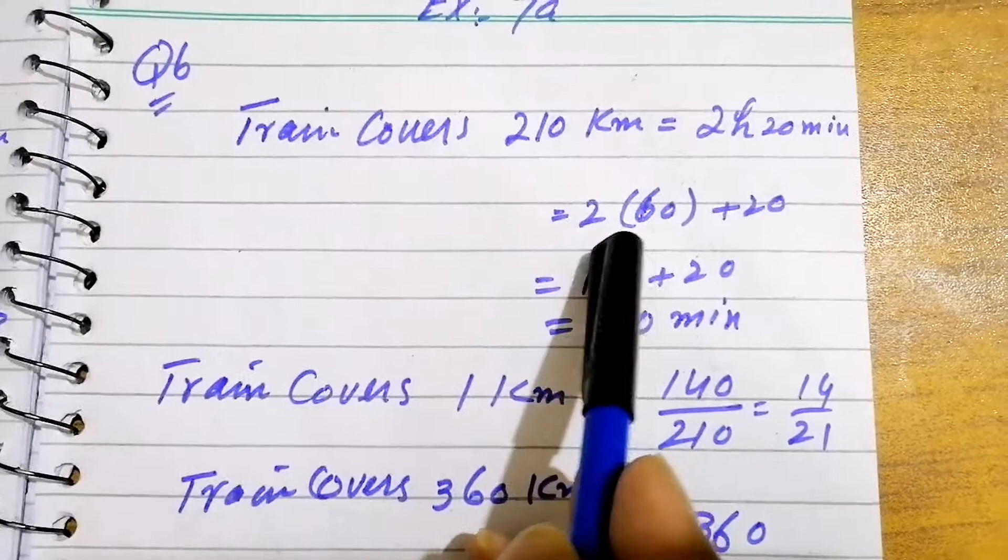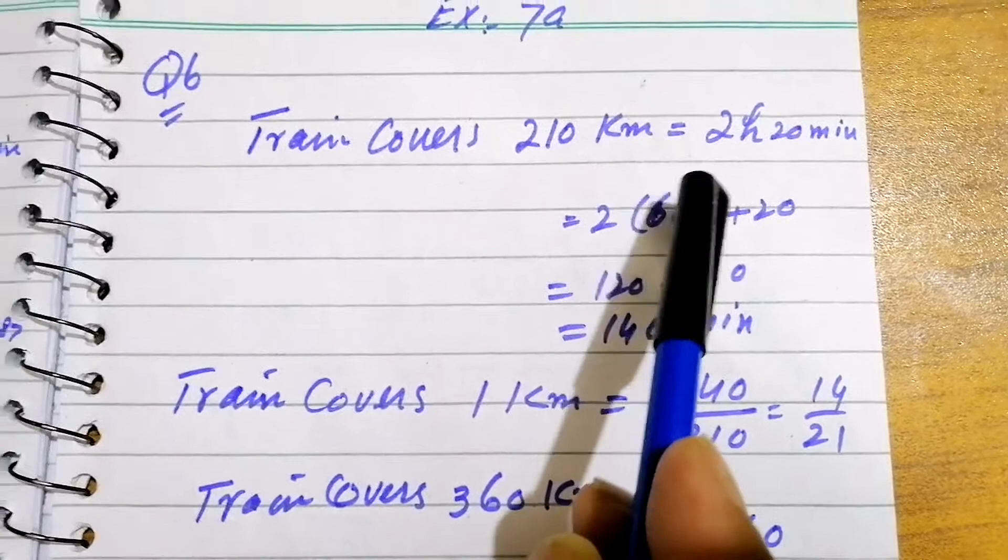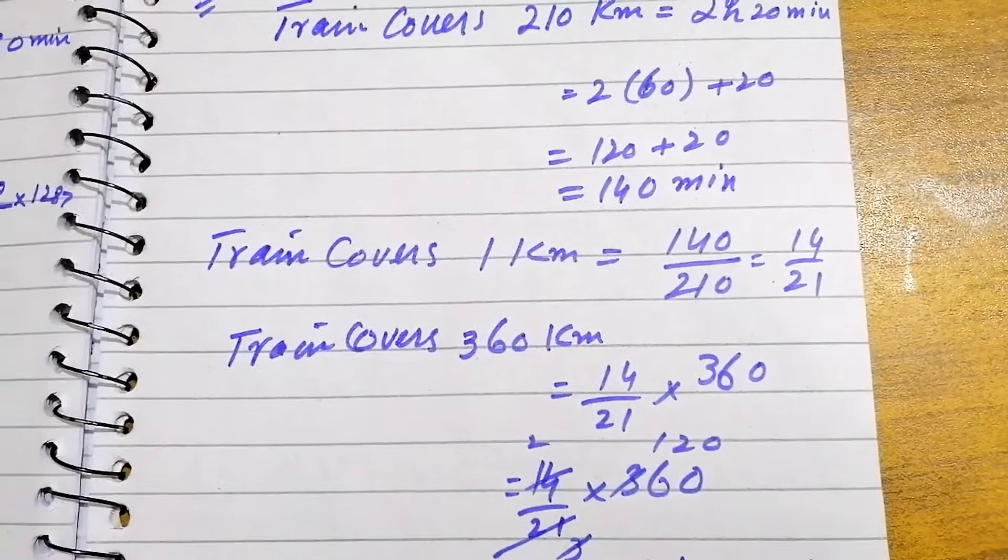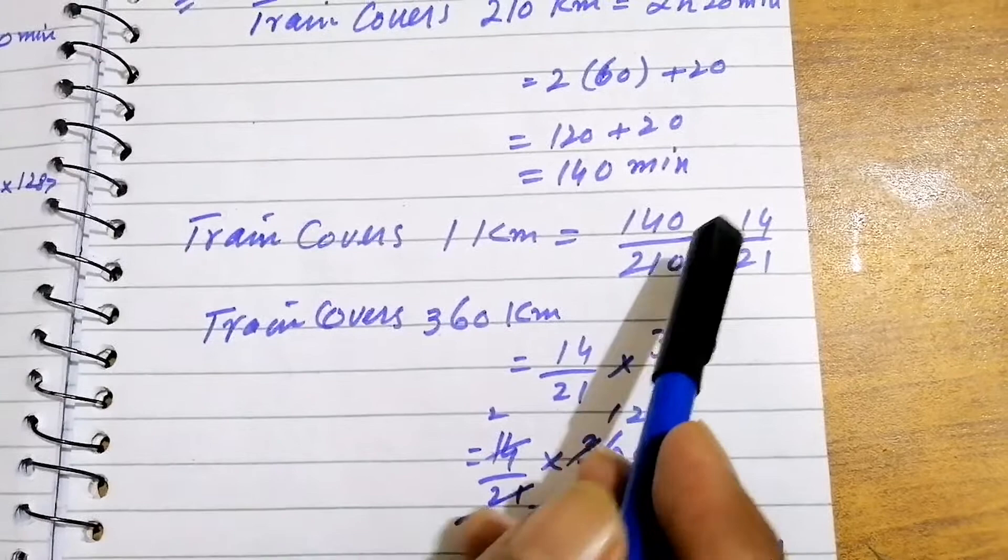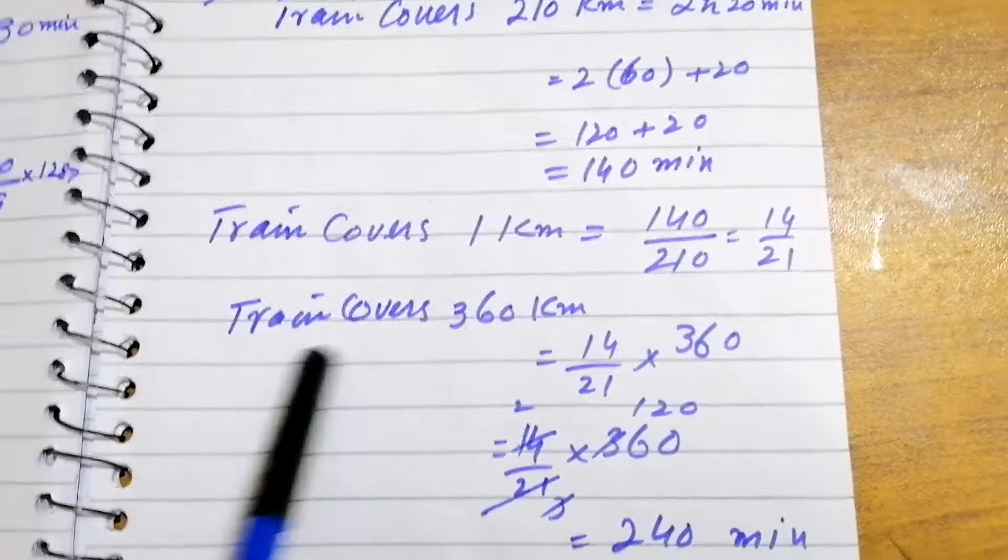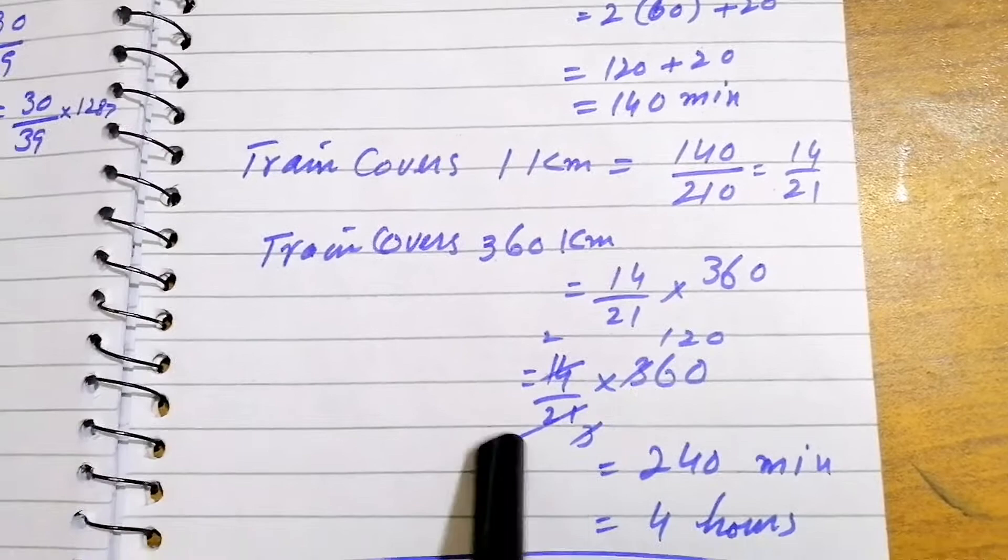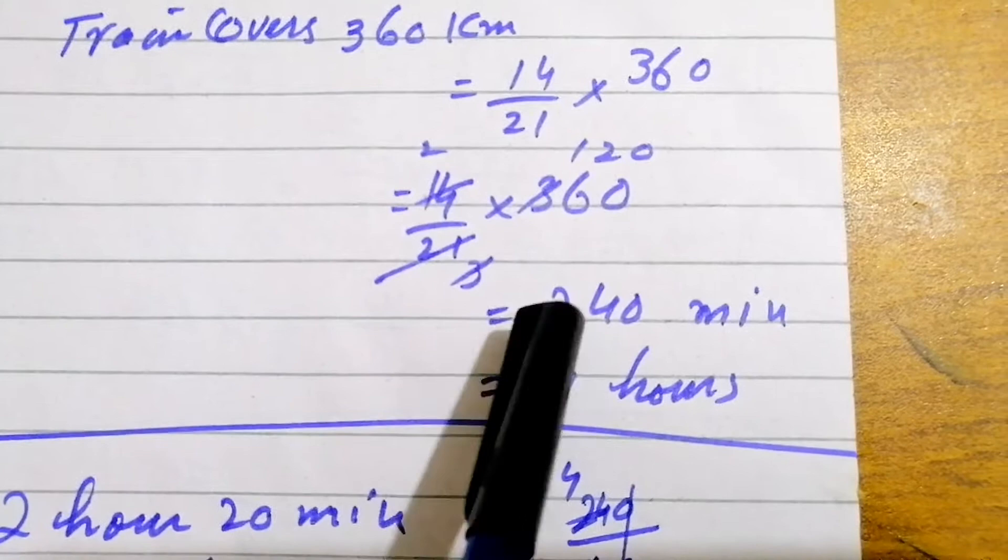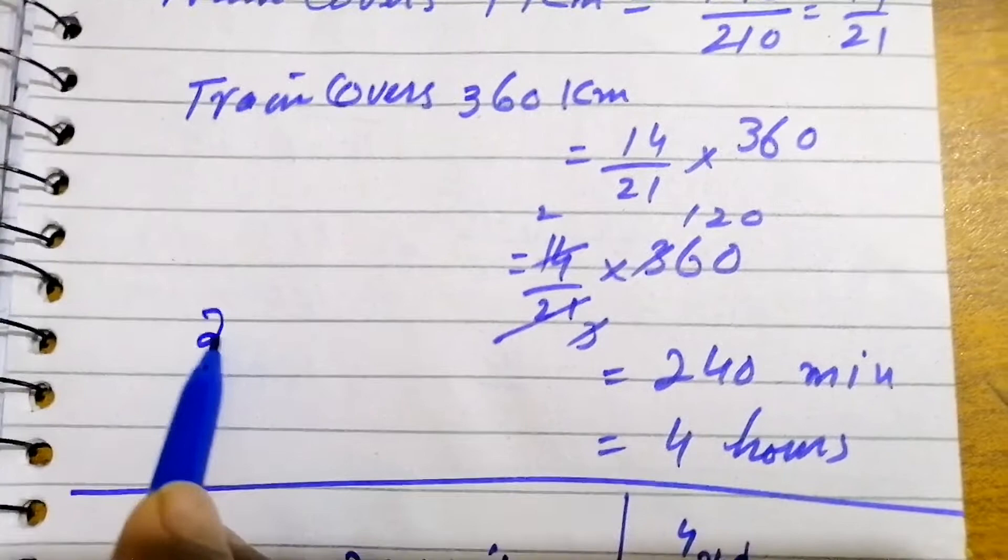Train covers 1 kilometer in 140 over 210. We just cancel the 0 and get 14 over 21. Train covers 360 kilometers. We multiply 360 with 14 over 21 and by canceling we get 240 minutes, and 240 minutes are equal to 4 hours. When we convert minutes into hours, we divide by 60, 6 for the 24, and it equals 4 hours.